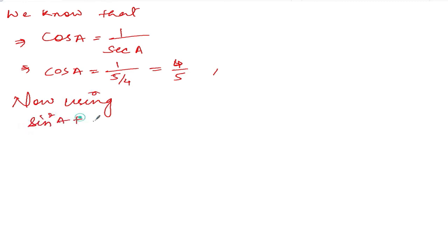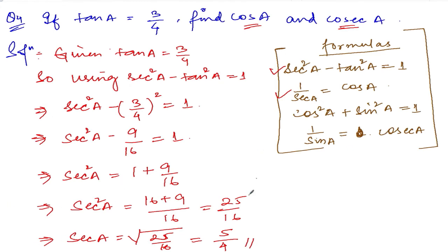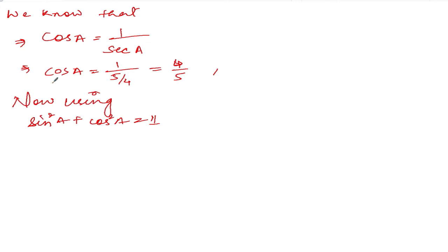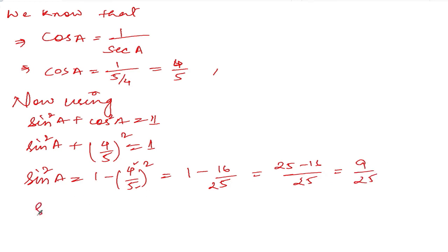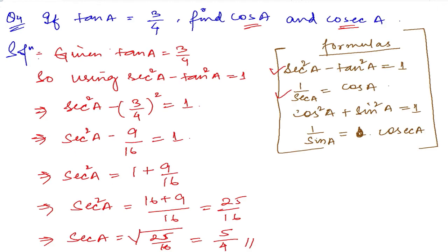Now using sin²(a) + cos²(a) = 1: sin²(a) + (4/5)² = 1, so sin²(a) = 1 - 16/25 = 25/25 - 16/25 = 9/25. Therefore sin(a) = √(9/25) = 3/5.